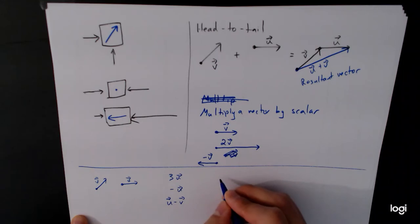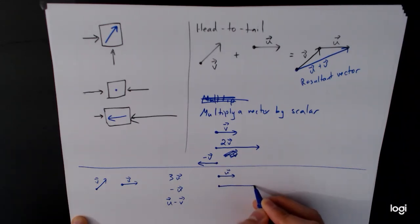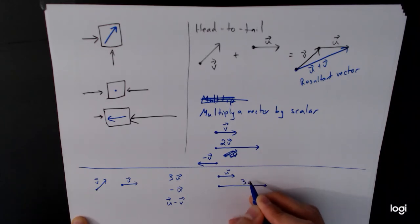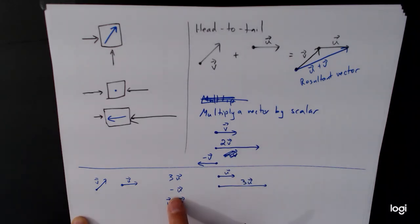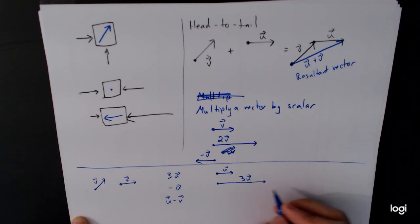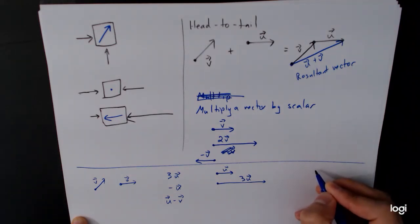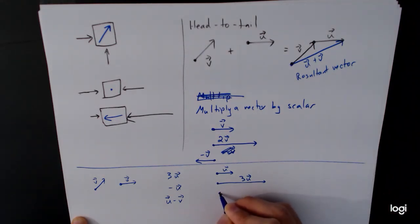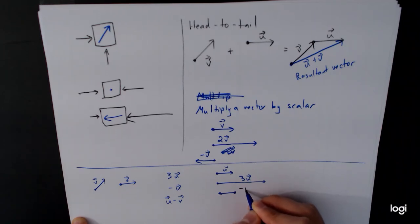Okay, so for 3u, if that's u, then we want the vector in the same direction. I'm going to draw u again down here. Same direction but three times as long. So 3u would look something like this. Negative u, same arrow but in the opposite direction. So negative u like that.